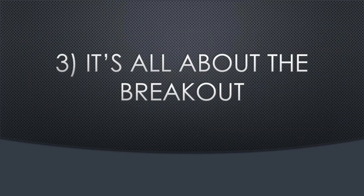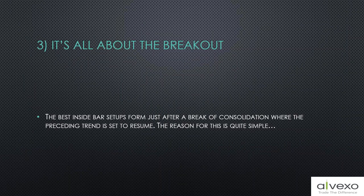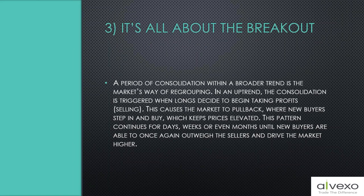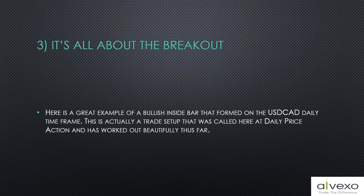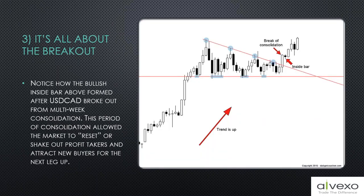Third — it's all about the breakout. The best inside bar setup forms just after a break of consolidation where the preceding trend is set to resume. A period of consolidation within a broader trend is the market's way of regrouping. In an uptrend, consolidation is triggered when longs begin taking profits, causing a pullback where new buyers step in. You can see a push, an uptrend that moved into consolidation, the breakout of the consolidation, and then continuation of the move up.